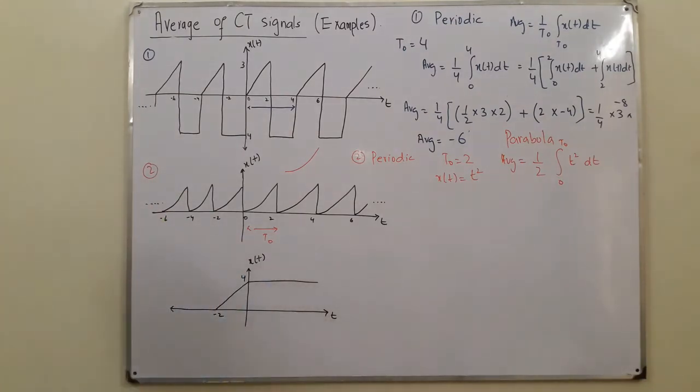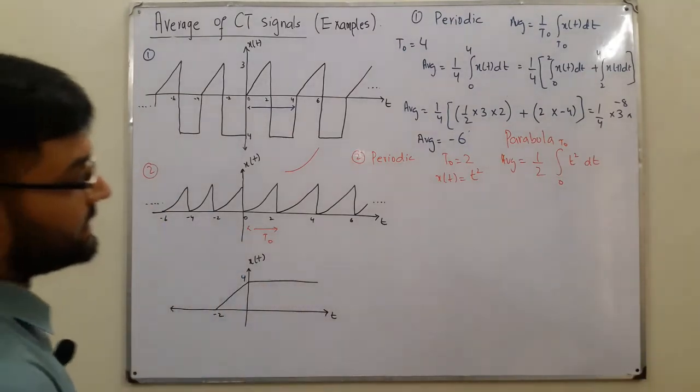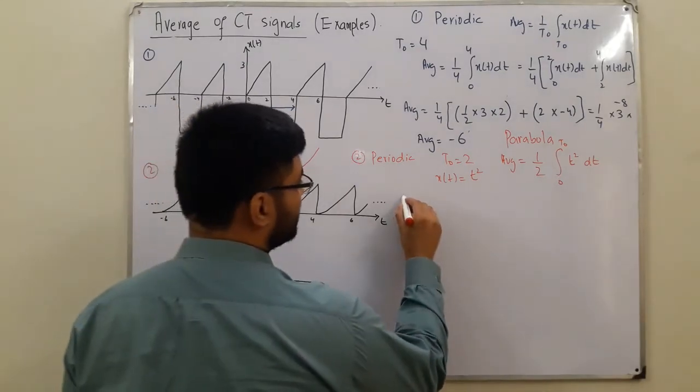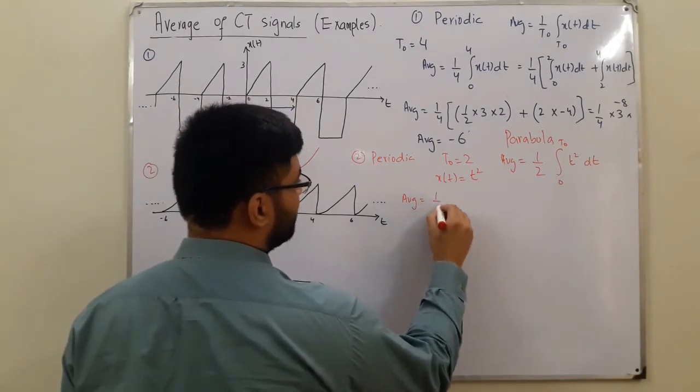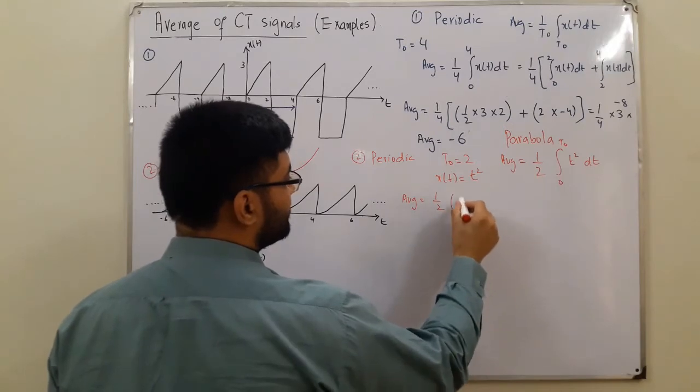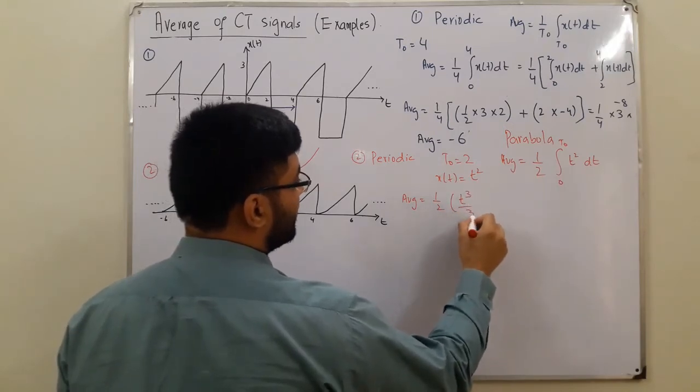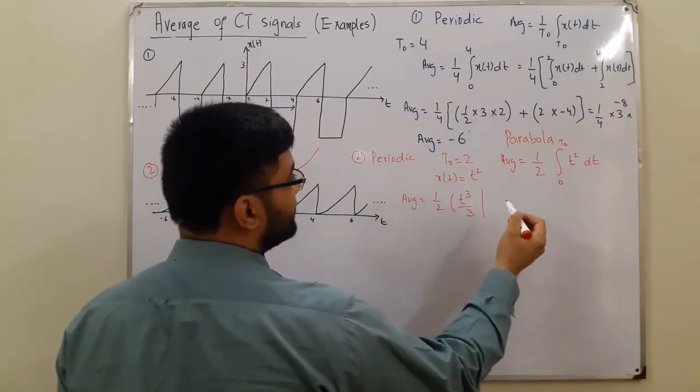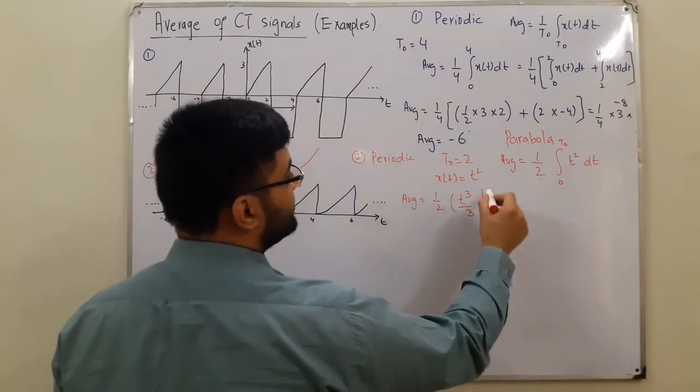Now what do you do? So you take the integration, so 1 over 2. This average would be 1 over 2. The integration for t squared would be t cubed upon 3, and the limits would be what? 0 and 2.